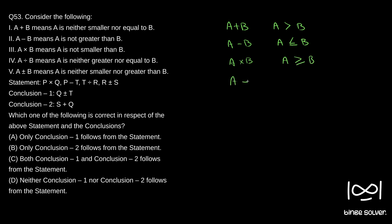Now A divided by B means A is neither greater nor equal to B — that is, A is less than B. And A plus or minus B means A is neither smaller nor greater than B, which means A is equal to B. So this is what each symbol means.